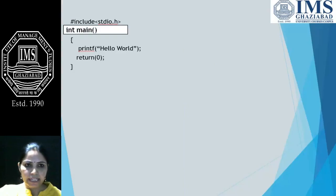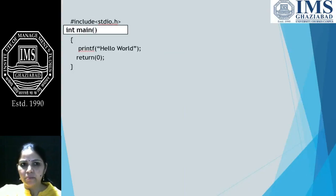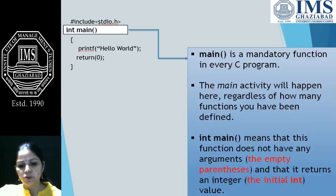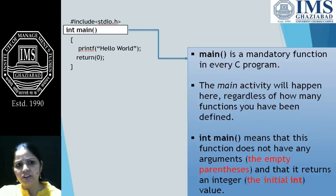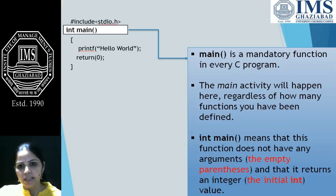The next statement is int main. Main is the main function — in any C program it is a mandatory function. Without main, no C program can be written. We can have as many functions as we want in our program, but the main function must always be there. All the main activity is defined in this particular function only.